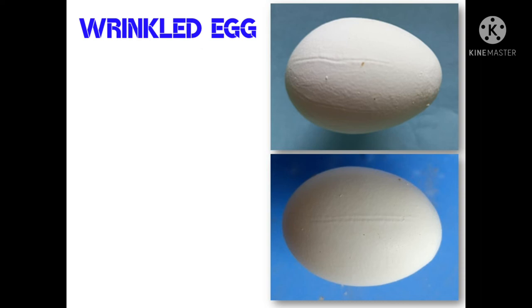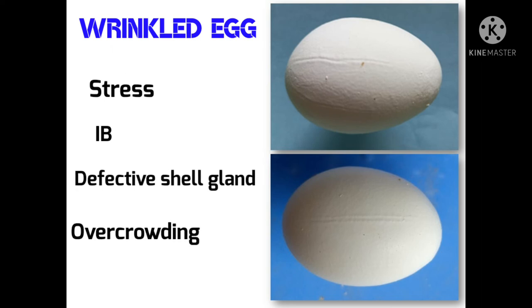This is a wrinkled egg. When the shells have thinly creased or wrinkled surfaces, then you can say it is a wrinkled egg. The wrinkles can range in severity from a single small wrinkle to quite a few large wrinkles as you can see in the picture. Stress, infectious bronchitis, defective shell gland, and overcrowding are the reasons that cause the wrinkling on the egg.